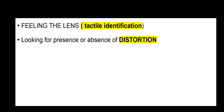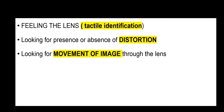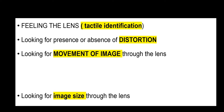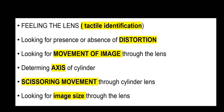The first method is by feeling the lens, which is called tactile identification. We can also identify lenses by looking for the presence or absence of distortion of the image. Lenses can also be identified by observing the movement of the image through the lens. Image size also helps in identification. We will also learn how to determine the axis of a cylindrical lens and the scissoring movement that occurs through a cylindrical lens.